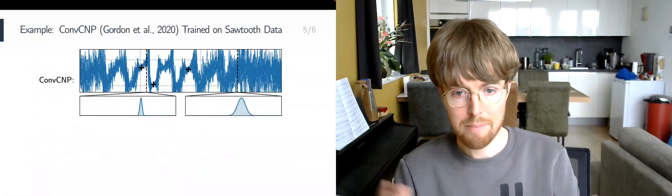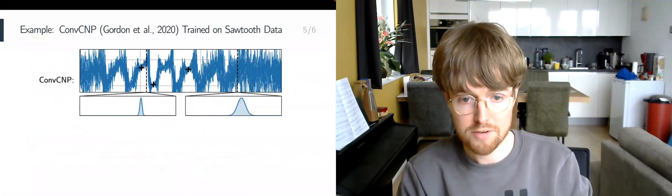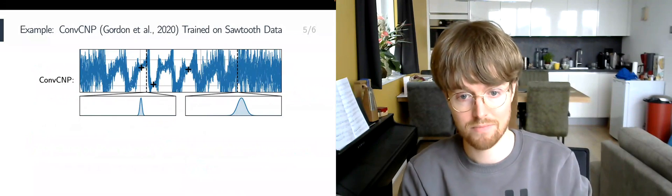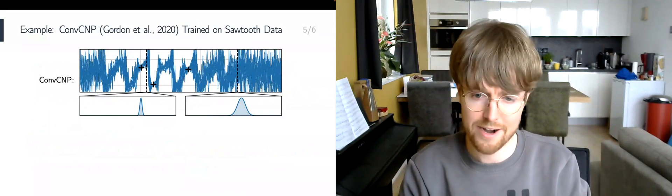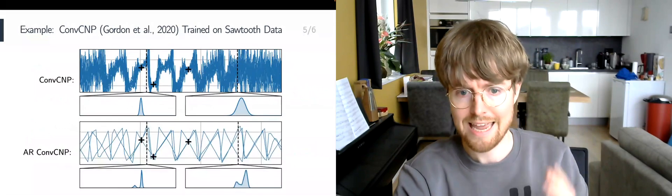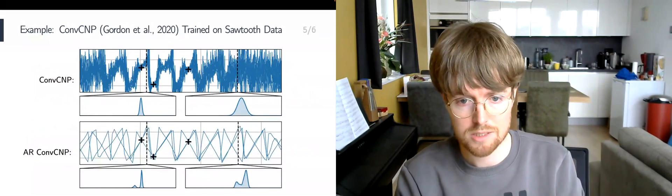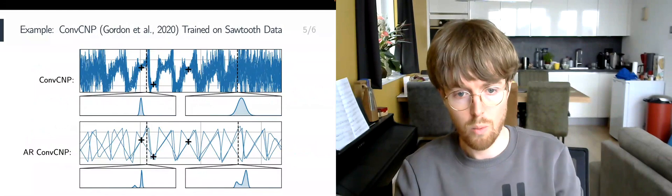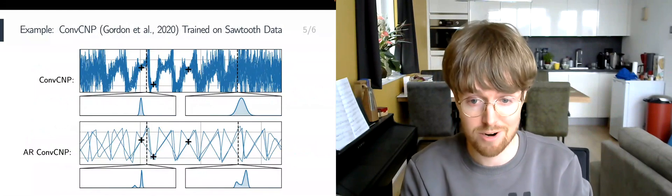As an example of how powerful AR CNPs are, consider the following ConvCNP trained on sawtooth data. The plot shows a sample, which looks very noisy. However, if we run the ConvCNP in AR mode, we get these beautiful looking sawtooth samples out, which exhibit multimodality and non-Gaussian marginals.